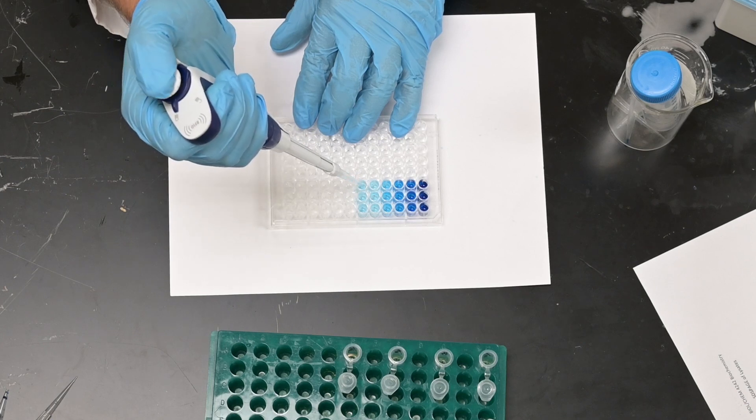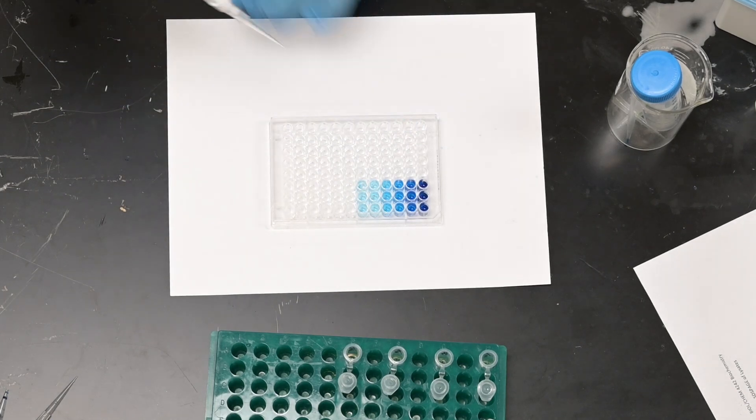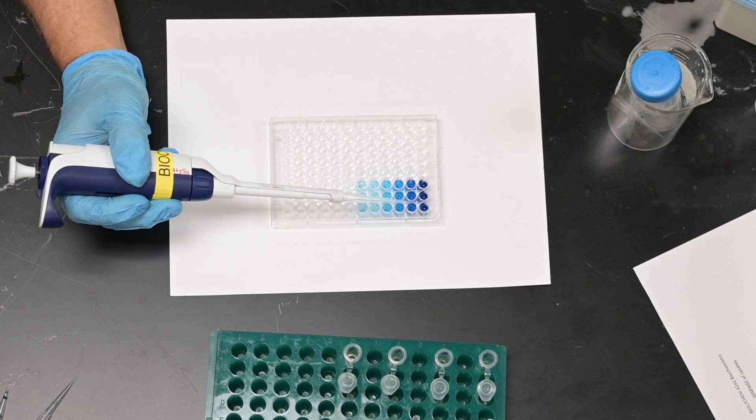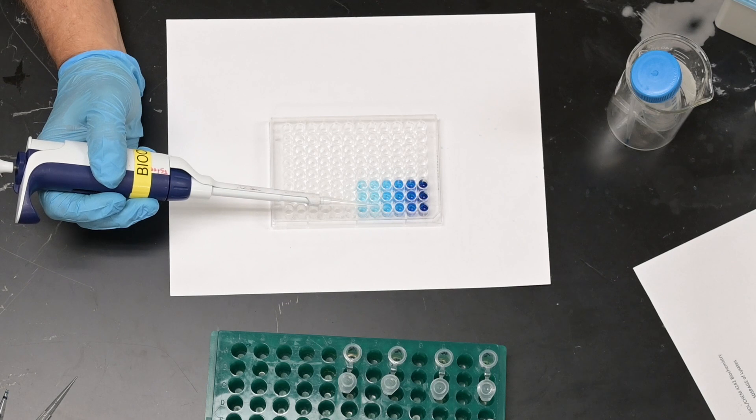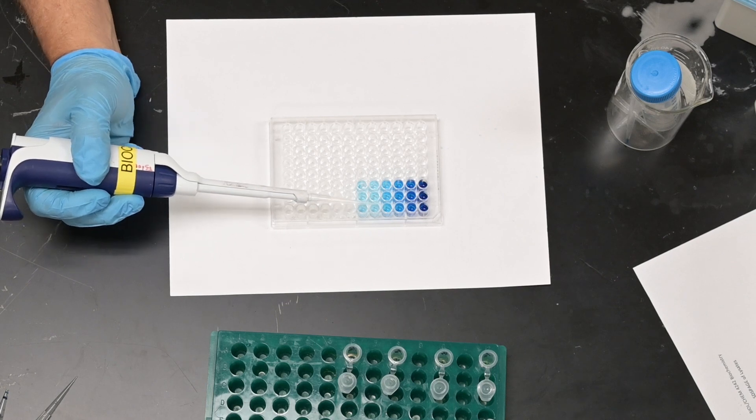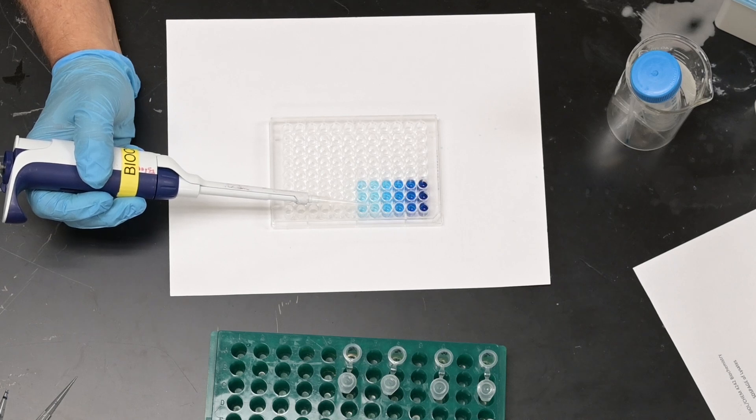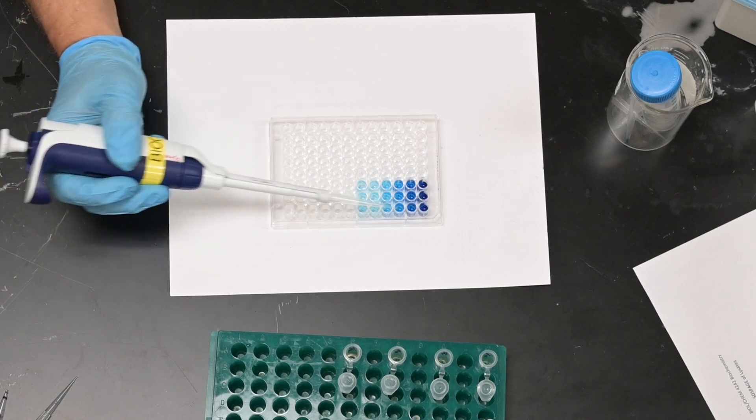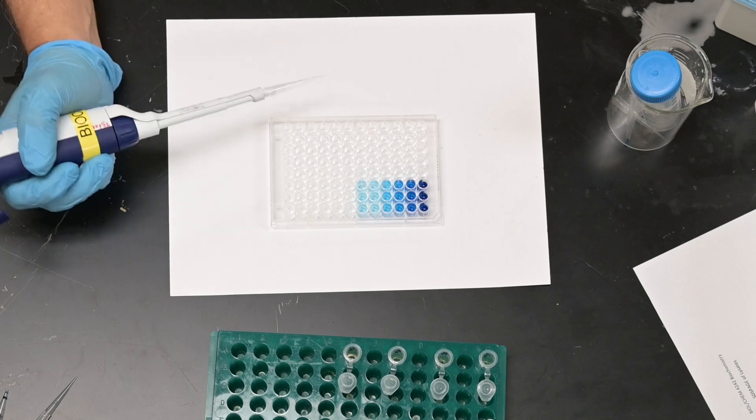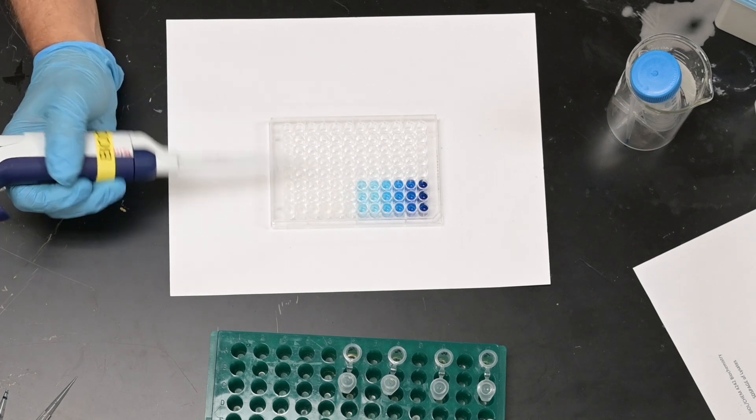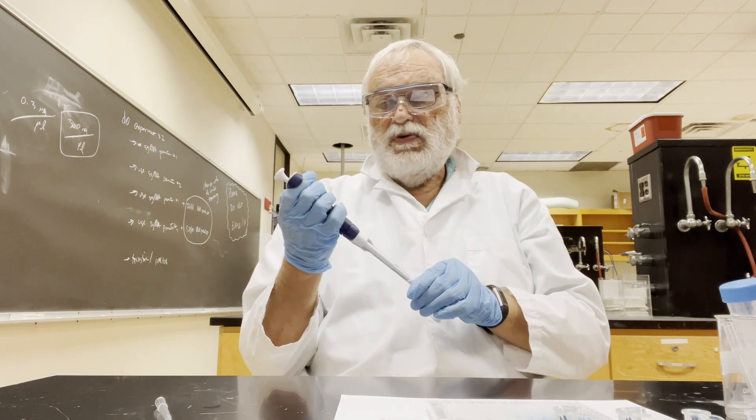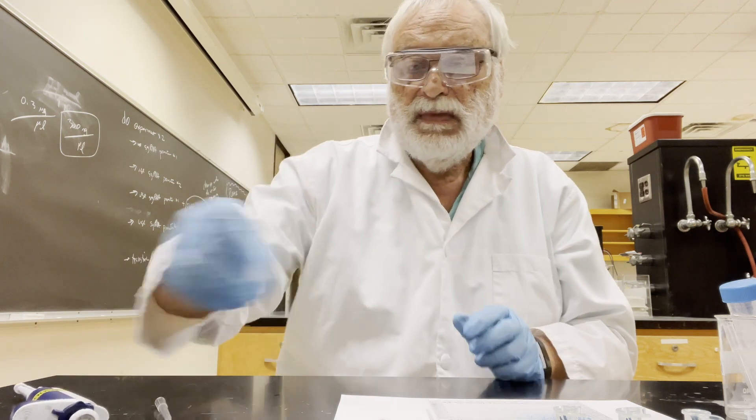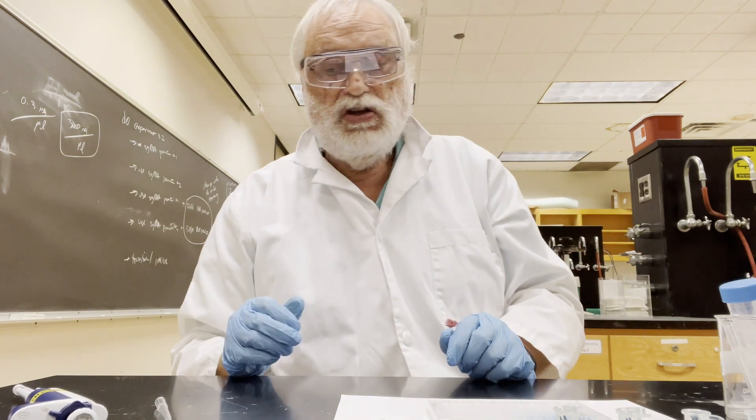And put the last in the well. So now we have a solution that's one percent, 0.5 percent, 0.25 percent, 0.125 percent, and 0.0625 percent, and we have triplicates. These are now ready to read in the plate reader. But the other part of the experiment is for you to use your pipette and get used to making dilutions using tubes.